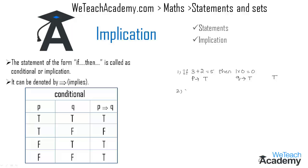In the next example we have: if 3×6=20, then 2+7=9. Let us consider the statements as a and b. Here, statement a is false since 3×6=18, and statement b is true since 2+7=9. Therefore the truth value for a implies b is true.